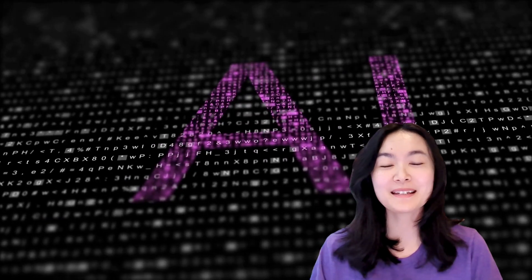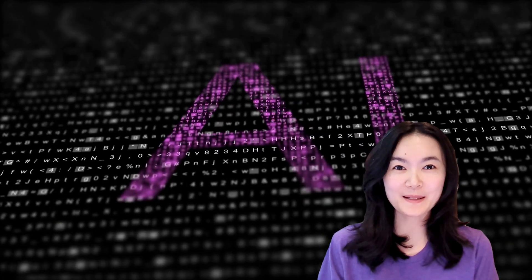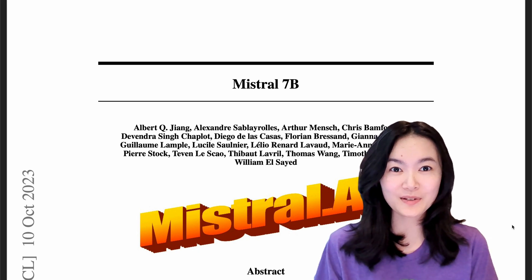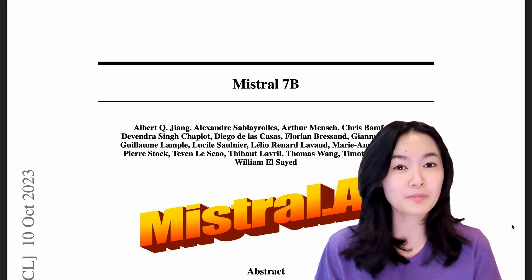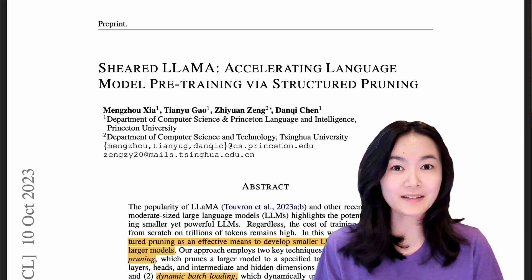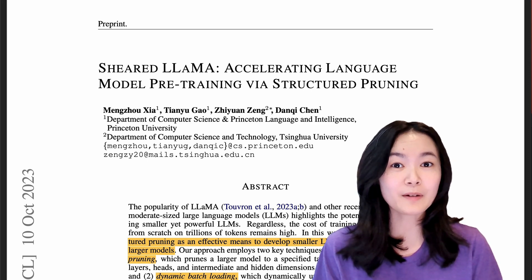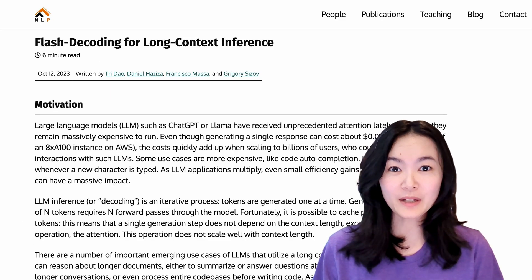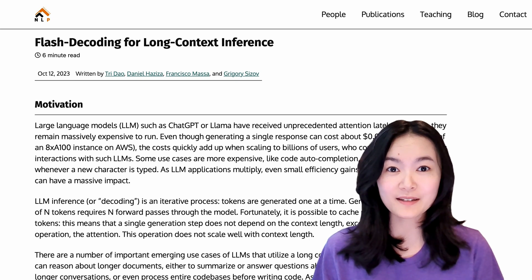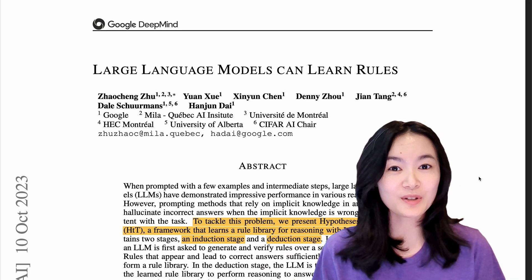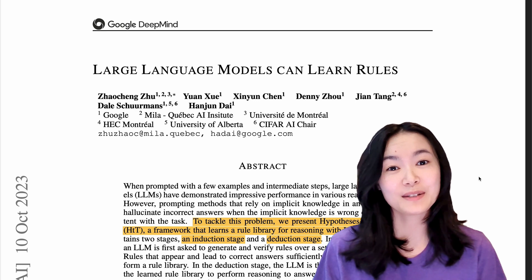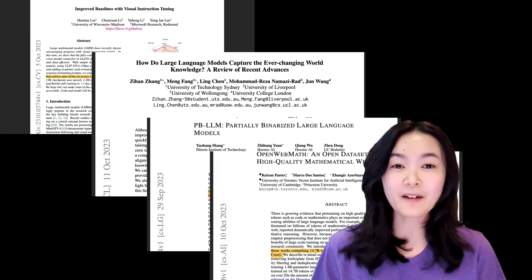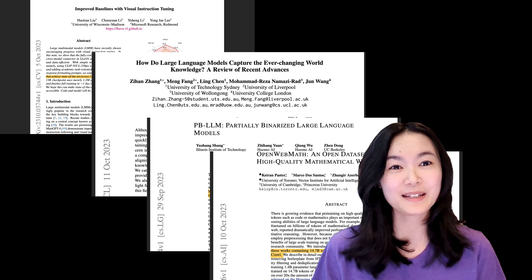Hi friends, let's dive into some exciting new papers this week. We're going to walk through how Mistral 7B produces its high performance and efficient models, how to cost-effectively develop a smaller model from pruning a larger model, how flash decoding works for long context inference, and how large language models learn about rules and reduce hallucination. Finally, we'll go through some other fun papers you might find interesting this week.